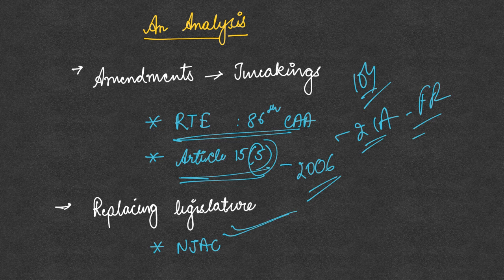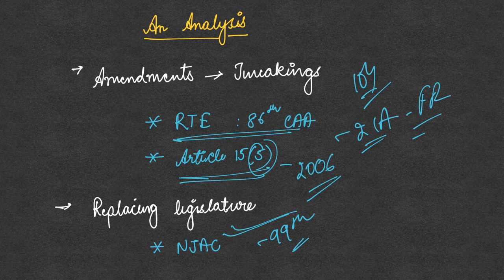A classic example is the National Judicial Appointments Commission. When the government introduced the NJAC Bill — the 99th Constitutional Amendment Act — and it was enacted by parliament, the judiciary struck it down as unconstitutional and null and void, because it violated the basic structure of judicial independence. As a result, the power that was with the parliament has now been shifted to the judiciary.